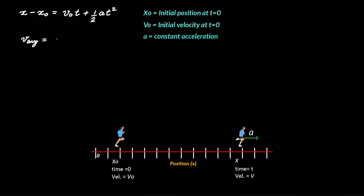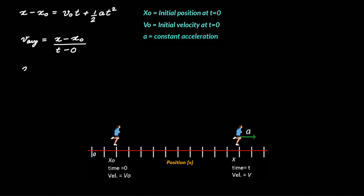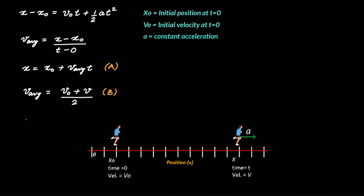We know that v_average = (x − x₀) / (t − 0), or x = x₀ + v_average × t, where v_average is the average velocity during the time from t = 0 to a later time t. For linear functions, to find the average between any two points, you just take the sum of the values at the two points and divide by 2. So to find average velocity between t = 0, when velocity is v₀, and some later time t, when velocity is v, we get v_average = (v₀ + v) / 2.